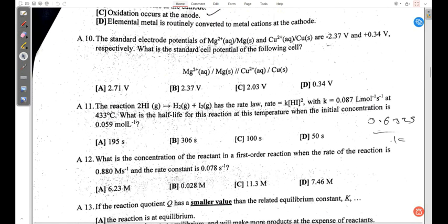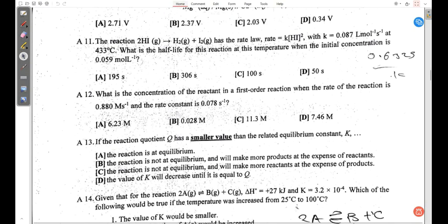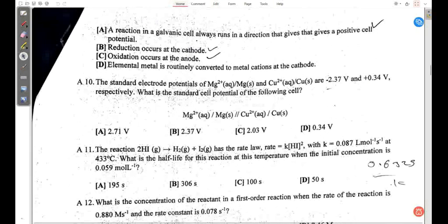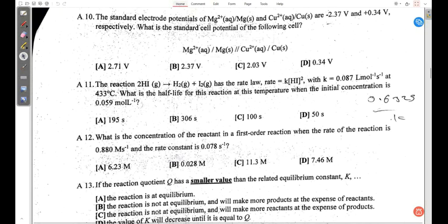Question 10: the standard electrode potentials of Mg2+(aq)/Mg(s) and Cu2+(aq)/Cu(s) are given. What is the standard cell potential? So this is something that is very simple based on this statement from the previous question. A reaction always runs in a direction that gives a positive cell potential.